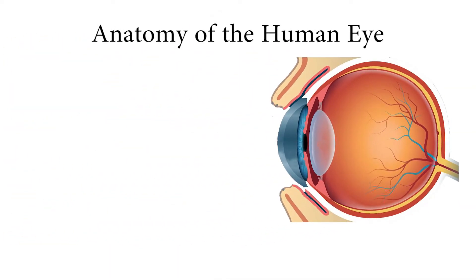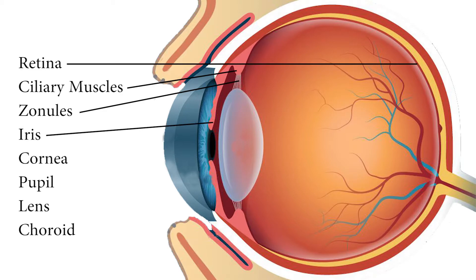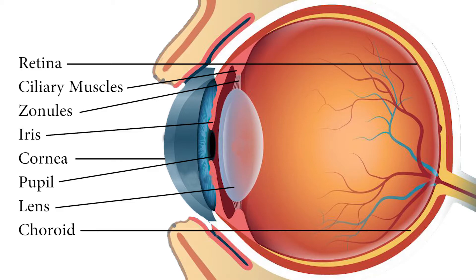First, we must identify some of the key anatomical structures of the eye: retina, ciliary muscles, zonules, iris, cornea, pupil lens, and choroid.